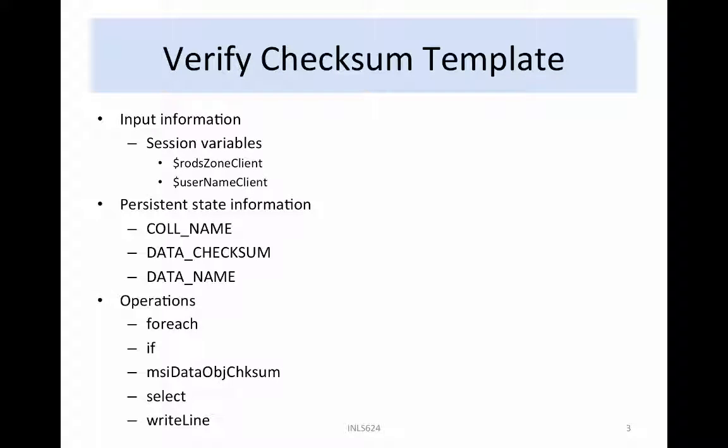A rule to verify that each file has a checksum and create missing checksums is available at lifelivezonehomerwmorerulestestchecksum.r. The rule uses the following input information and operations. There are no input parameters. The rule processes all files within your home collection and sub-collections.